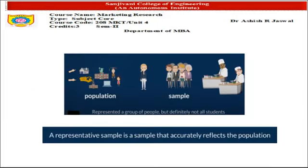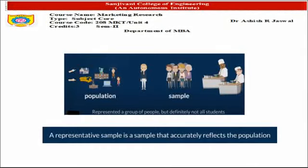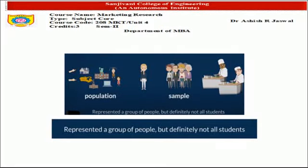The second characteristic is that a representative sample accurately reflects the population. Representation means a group of people that represents the whole — but definitely not all students. In this case, I collected information only through the canteen. They represented a group of people but did not represent all other students from the population. Hence, the sample I collected fulfills neither criterion: it is neither random nor representative.